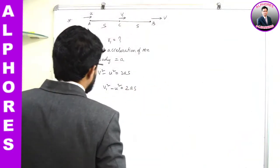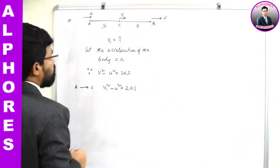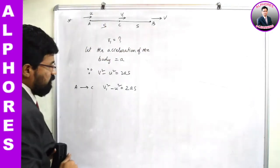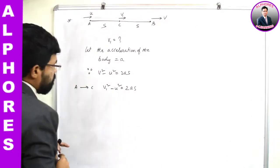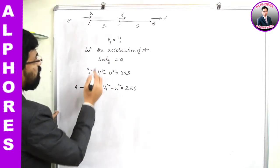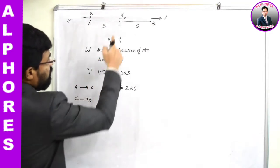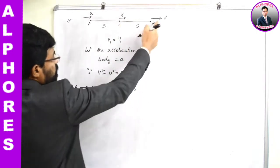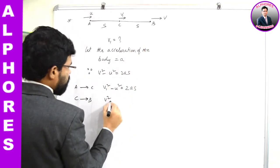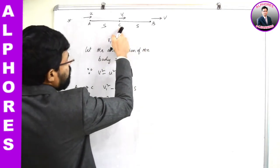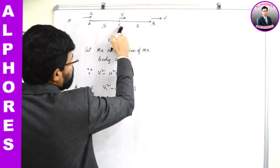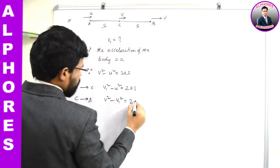I will erase the default equation to avoid confusion, since we already have v and u defined differently here. Now I will apply the same equation for C to B. For the journey from C to B, the initial velocity is v1 and the final velocity is v. So: v² - v1² = 2as, where the distance of separation between C and B is also s.